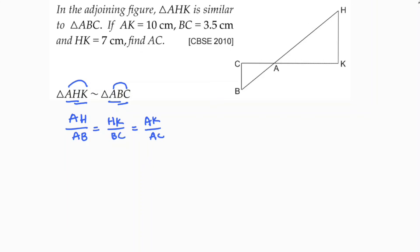Now I will substitute the values. AH I don't have and AB also I don't have, so HK is 7, which is 7. BC is 3.5, AK is 10, and we need to find AC.